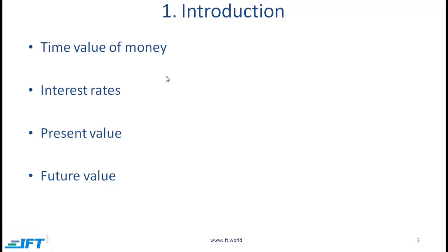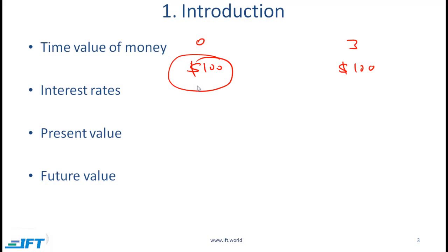A brief introduction. If you have $100 today versus an option to receive $100 after three years — so this is time zero, and this is at the end of three years — what would you prefer? Obviously, you would prefer $100 today. Even though we have $100 in both cases, you prefer $100 today. This means that there has to be some value associated with time, because you are putting more value on the $100 that you are getting today relative to the $100 at a later point in time.